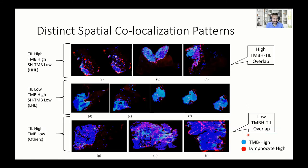Once we had this information, we looked at the spatial distribution and found distinct collocalization patterns across different groups. For example, the TIL-high, TMB-high, low heterogeneity group had a lot of overlap, versus the TIL-low, TMB-high, low heterogeneity group, among others.